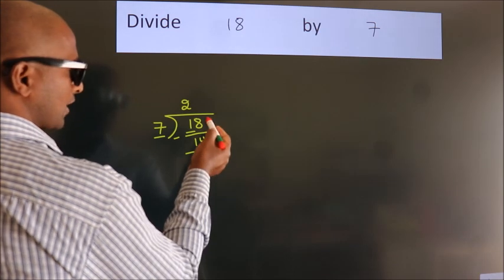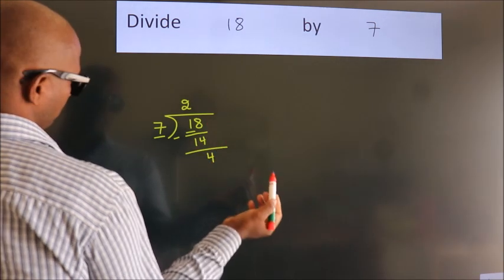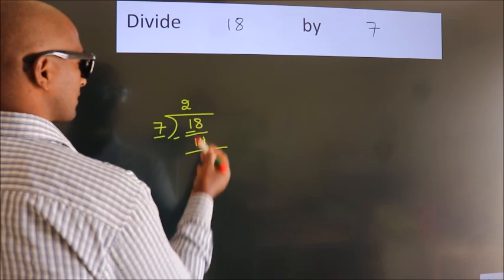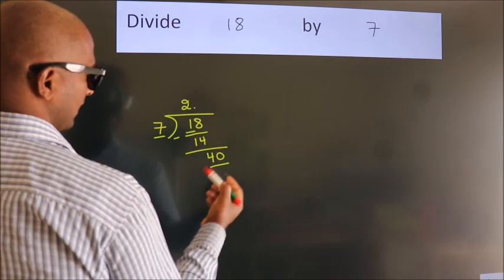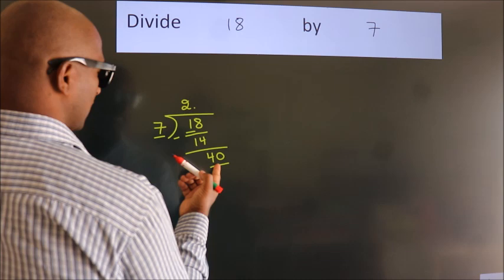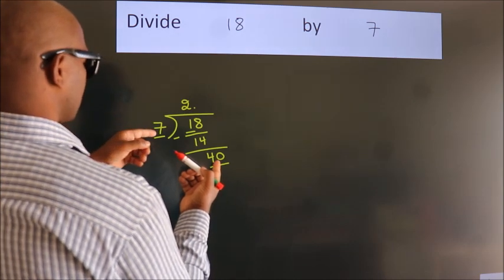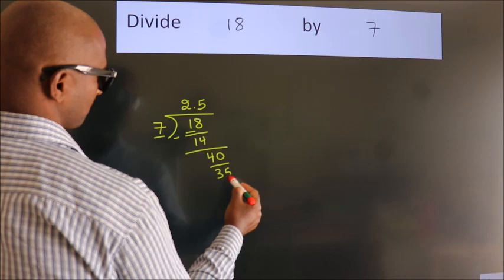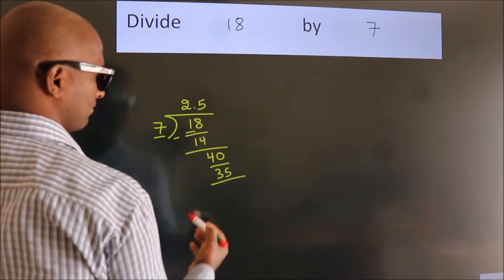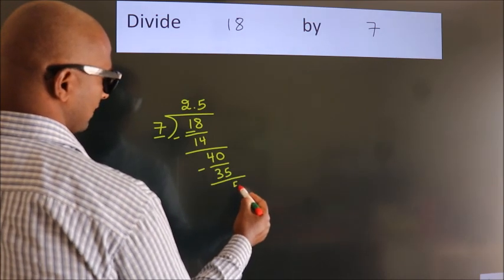After this, no more numbers to bring it down. So what we do is, we put dot take 0. So 40. A number close to 40 in 7 table is 7 fives, 35. Now we subtract. We get 5.